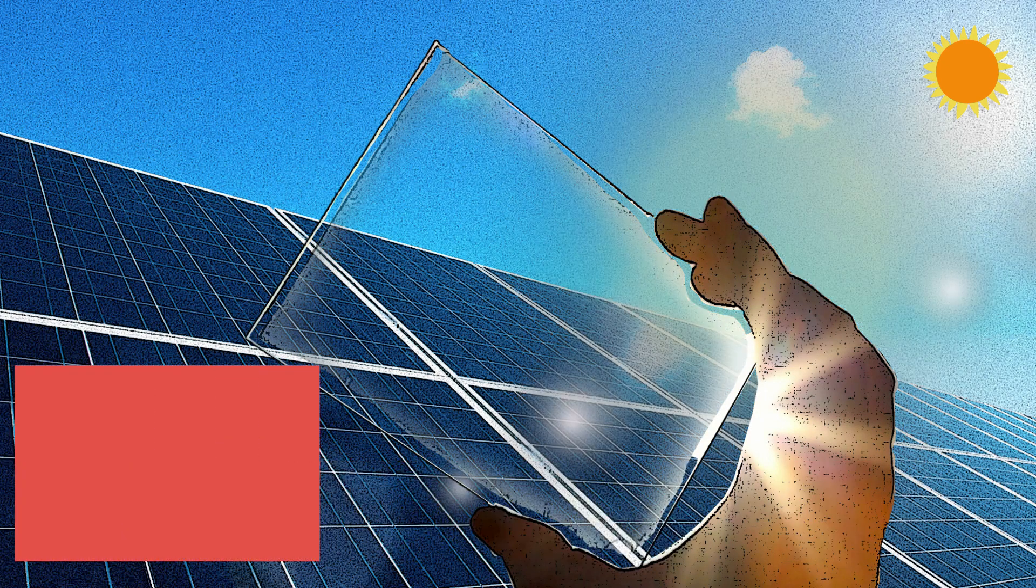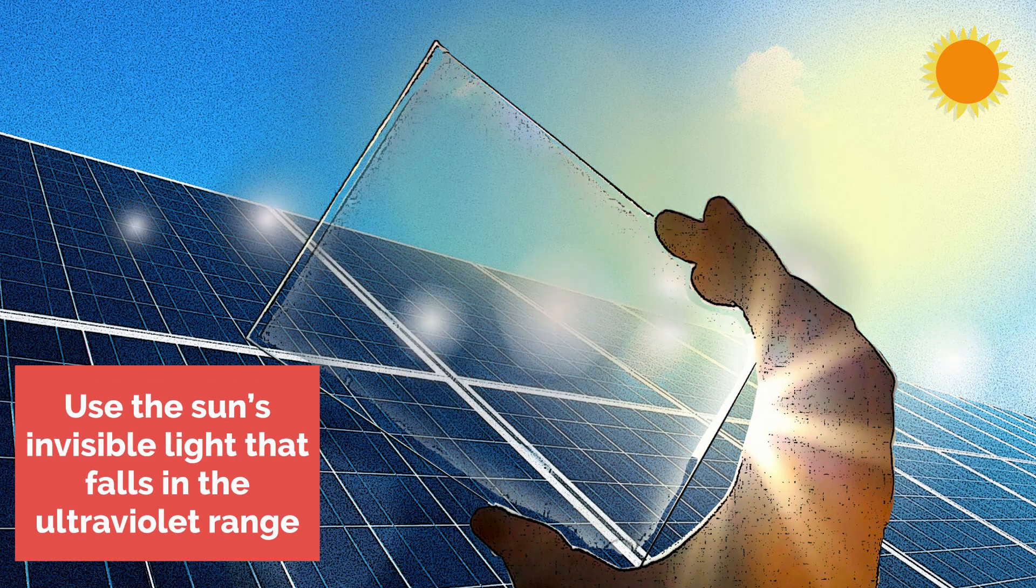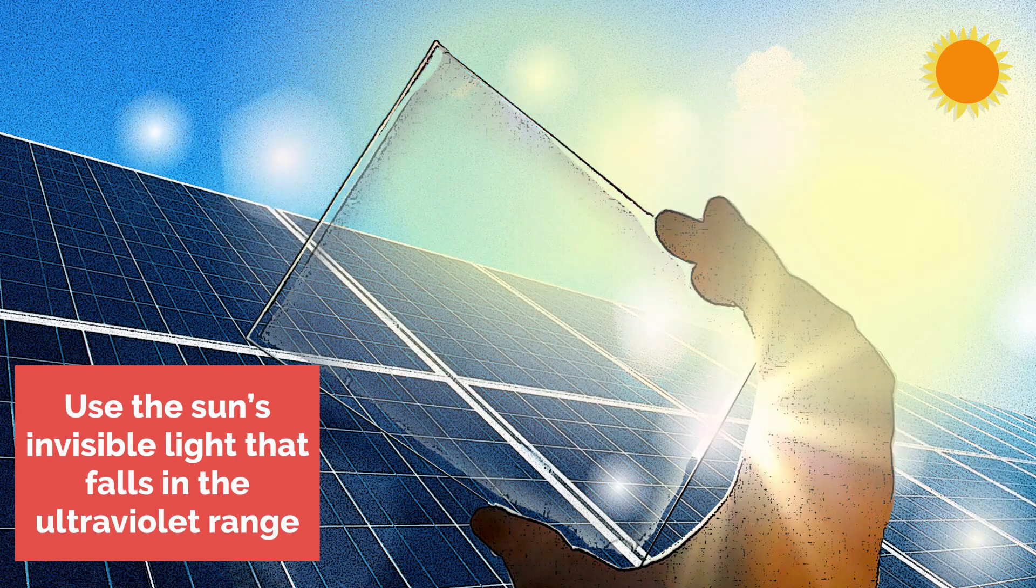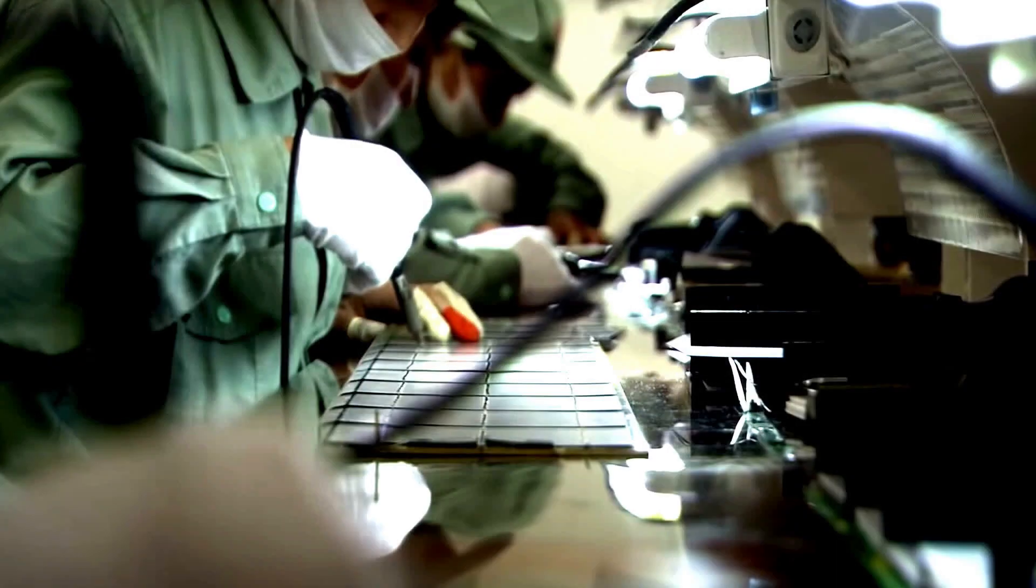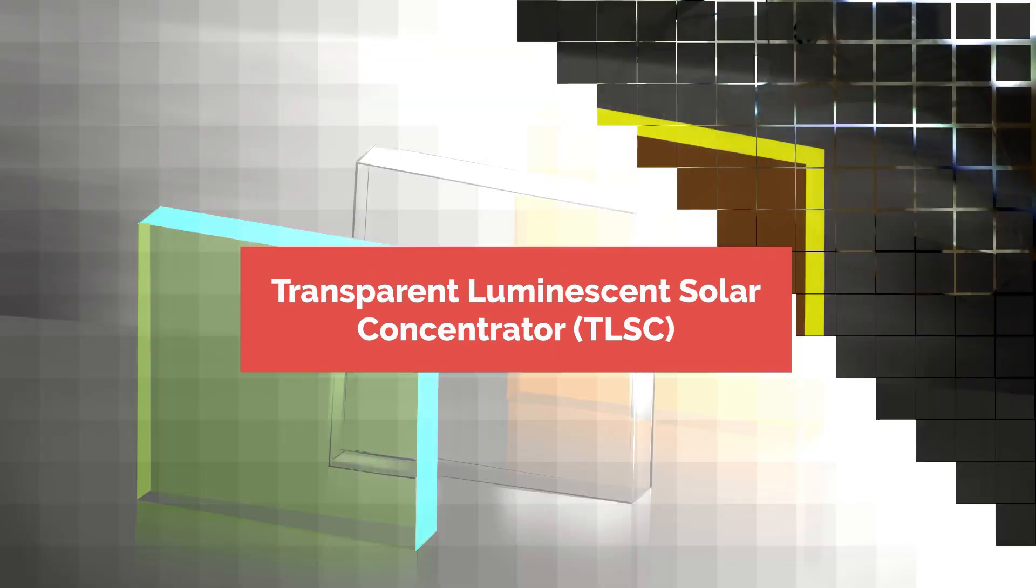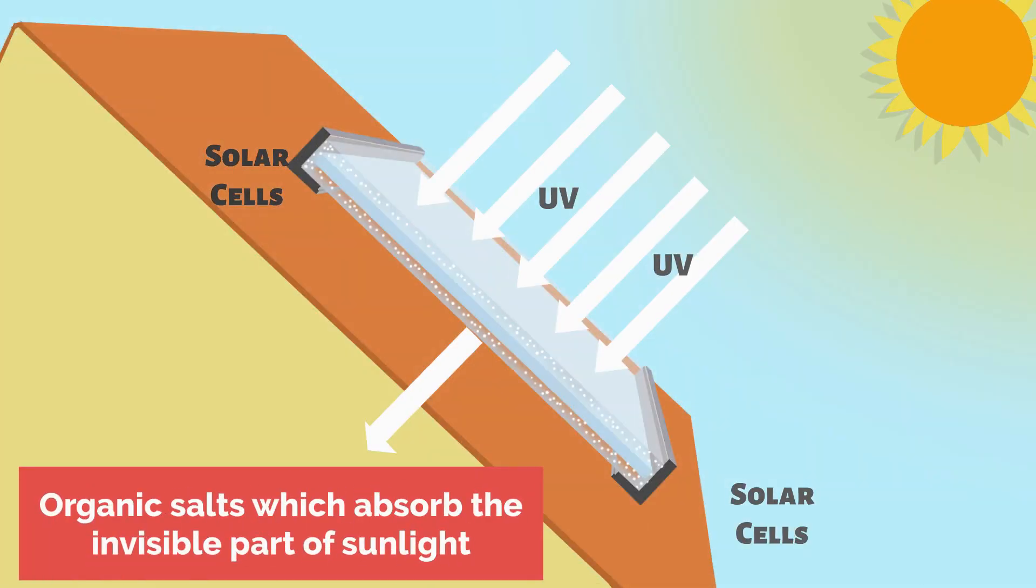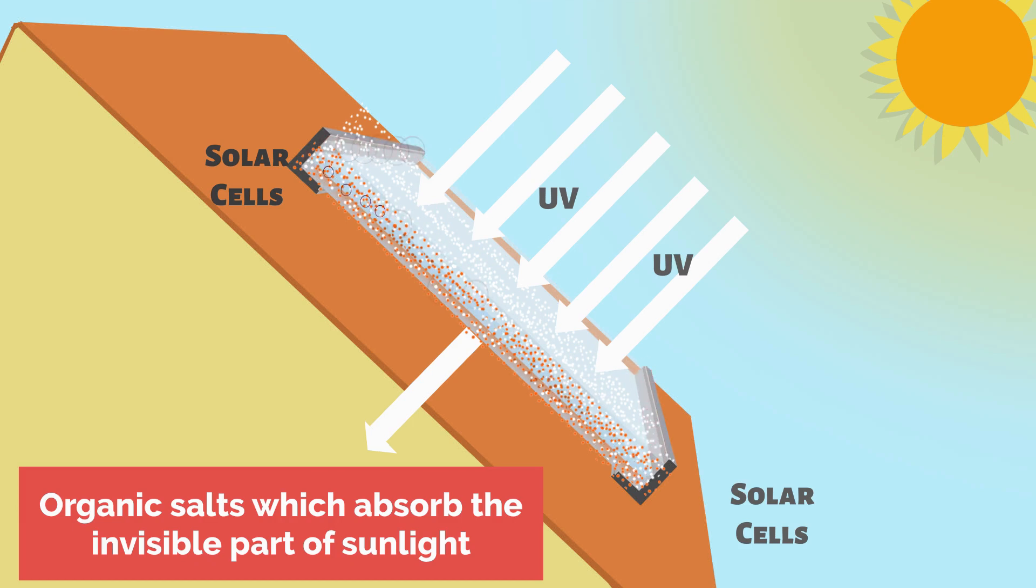These transparent cells use the sun's invisible light that falls in the ultraviolet range. Scientists have developed what is called a transparent luminescent solar concentrator containing organic salts which absorb the invisible part of the light. These salts then glow as another invisible wavelength. This light is then guided to the edge of the panel where thin solar strips convert it to electricity.